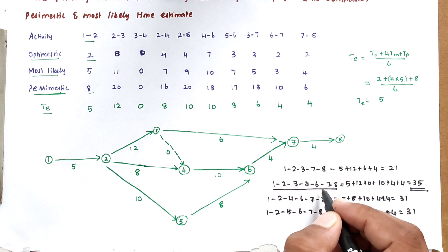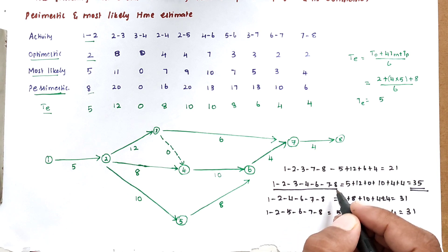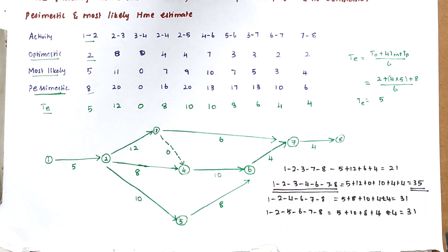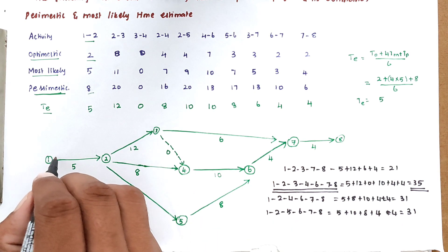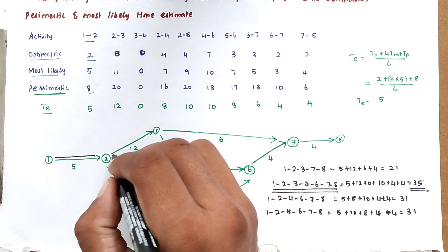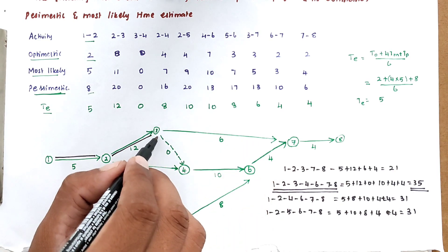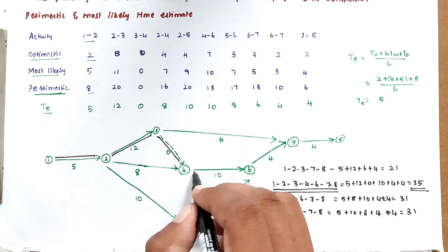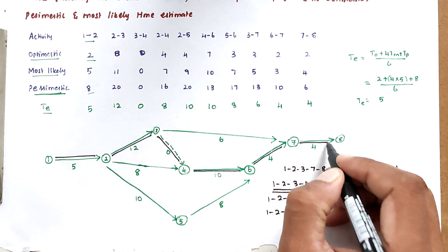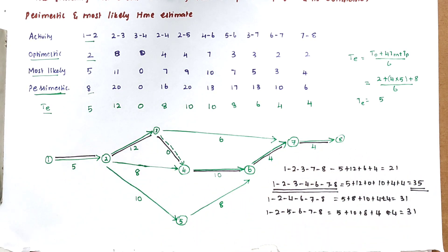The highest duration is 35, corresponding to path 1-2-3-4-6-7-8. This is the critical path and the critical (project) duration. We mark this with a double line on the network diagram: 1→2→3→4→6→7→8. This is how we solve a PERT problem. We will see the next video — thank you.